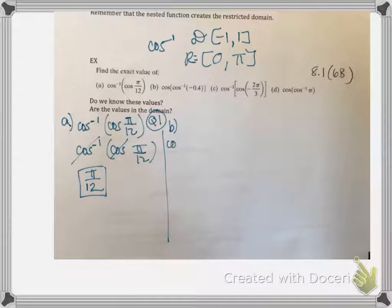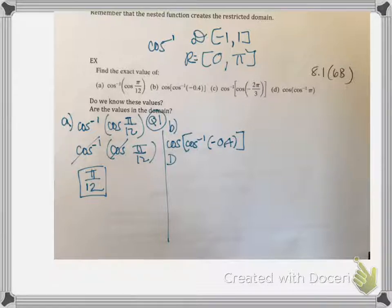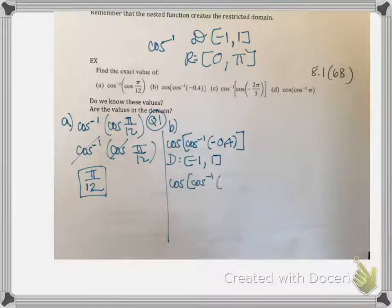B: cosine on the outside and inverse cosine on the inside, with value negative zero point four. That's a value, so just check if it's in the domain. The domain for inverse cosine is negative one to one — negative zero point four is in that range, so we're good. Canceling inverse cosine with cosine, the answer is negative zero point four.